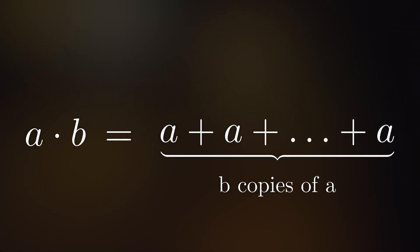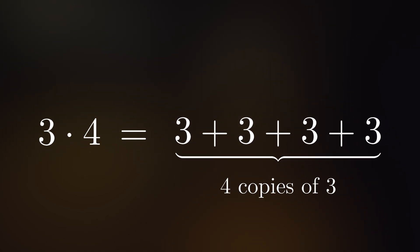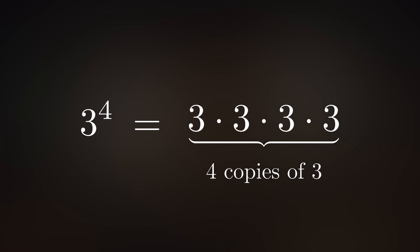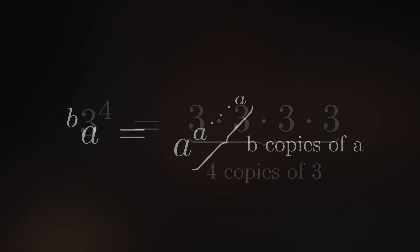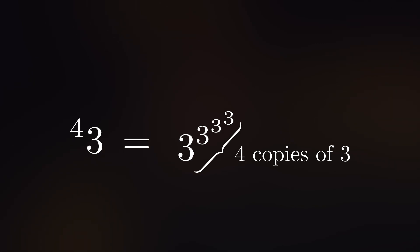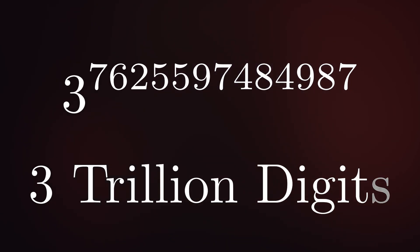Multiplication is just repeated addition, so 3 times 4 is equal to 3 plus 3 plus 3 plus 3. And exponentiation is just repeated multiplication, so 3 to the power of 4 is 3 times 3 times 3 times 3, or 4 copies of 3. Tetration is repeated exponentiation, so 3 tetrated to 4 means a power tower of 3's, 4 high — that is, 3 to the power of 3 to the power of 3 to the power of 3. Working down from the top, that equals 3 to the power of 3 to the power of 27, or 3 to the power of more than 7 trillion, which is a number that has more than 3 trillion digits.